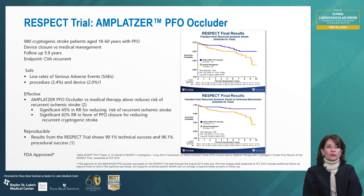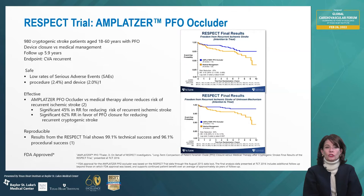In this landmark study there were 980 cryptogenic stroke patients aged 18 to 60 with a PFO, randomized to device closure versus medical management and followed for nearly six years with recurrent stroke as the endpoint. There were low serious adverse event rates; procedural adverse risks were low at 2.4%. There was a 45% risk reduction in recurrent ischemic stroke in those with the closure device, and a significant 62% relative risk reduction in favor of PFO closure for reducing recurrent cryptogenic stroke. Technical success was 99% and procedural success 96%, and based on this trial the Amplatzer device was FDA approved for PFO closure.